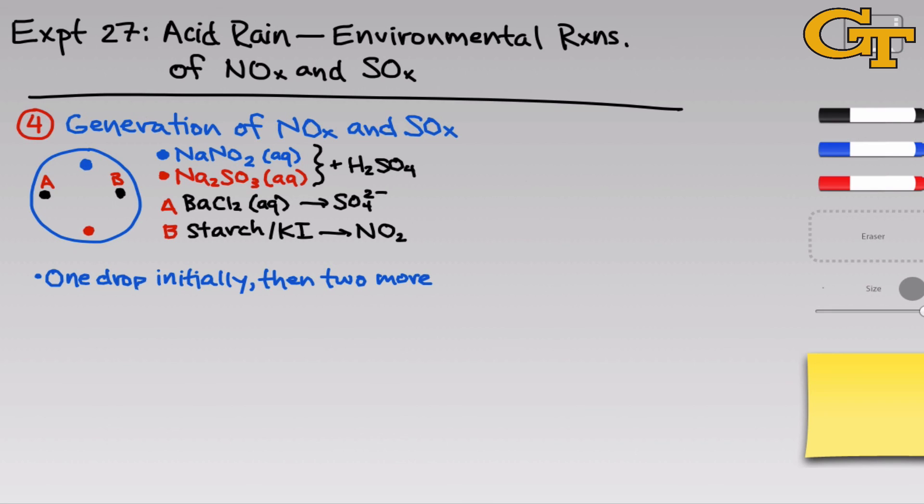We're going to start with just one drop each of sodium nitrite and sodium sulfite to keep the concentrations of NOx and SOx relatively low. We'll make some observations, and then we'll add two more drops of each to the blue and red droplets, to observe what happens when the concentrations of these gases increase substantially.